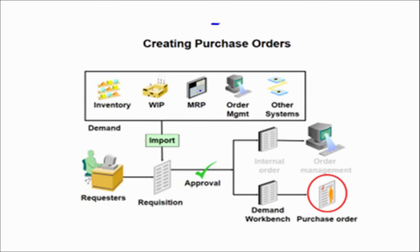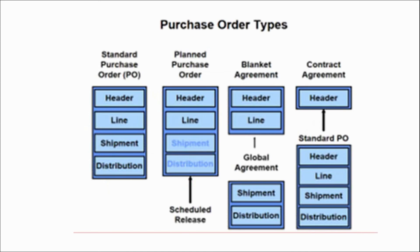How can we create a purchase order? A purchase order can be created through several modules — you can import it from inventory, WIP, MRP, order management, or from a legacy system. You can also create a purchase order through a requisition. When a requisition is found and approved by the concerned authority and it is a purchase requisition, it will go to the demand workbench. From the demand workbench, you will create a purchase order either automatically or manually.